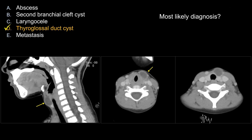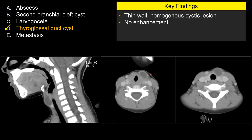The best choice is D, thyroglossal duct cyst. Let's look at some of the features that make choice D the best answer here. You can see there's a cystic lesion that's slightly off midline and looks benign in that the wall is thin. The internal fluid content looks very homogeneous. There's no rim enhancement and there's no suspicious internal enhancing soft tissue component.